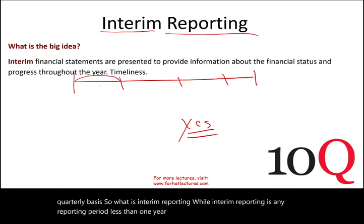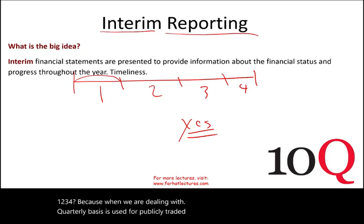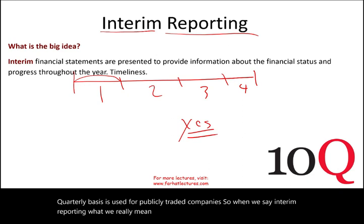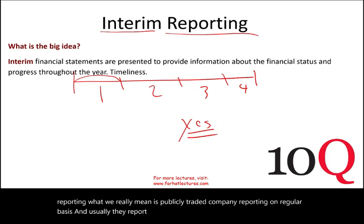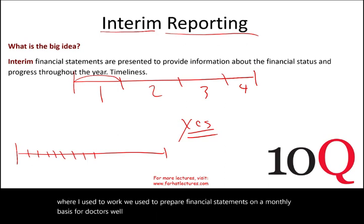Why quarterly? Because quarterly reporting is used for publicly traded companies. When we say interim reporting, we really mean publicly traded companies reporting on a regular basis, and usually they report on a quarterly basis. In the real world where I used to work, we prepared financial statements on a monthly basis for doctors — that's also interim reporting.